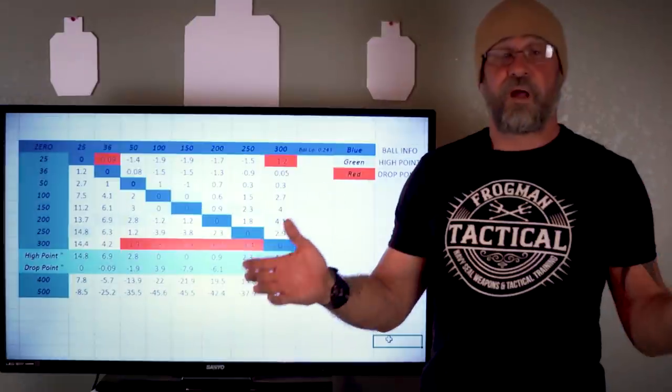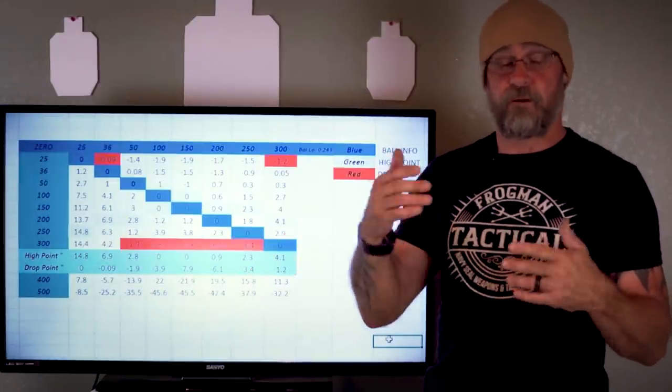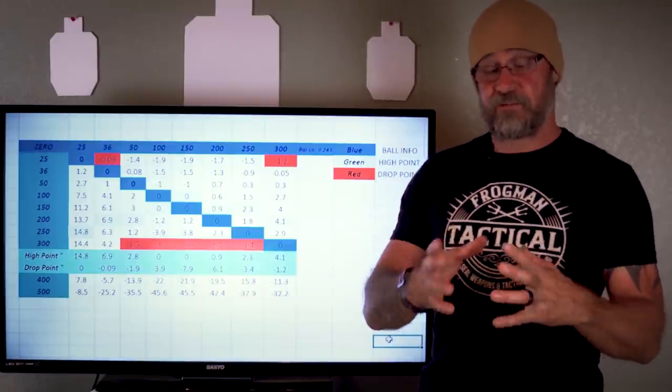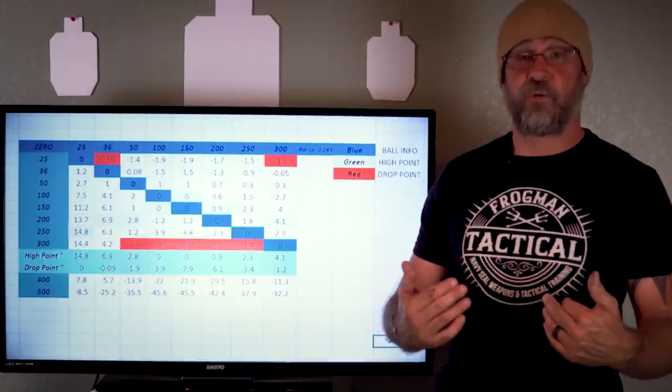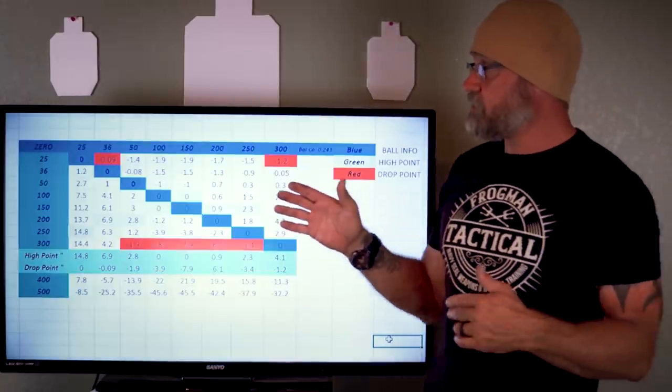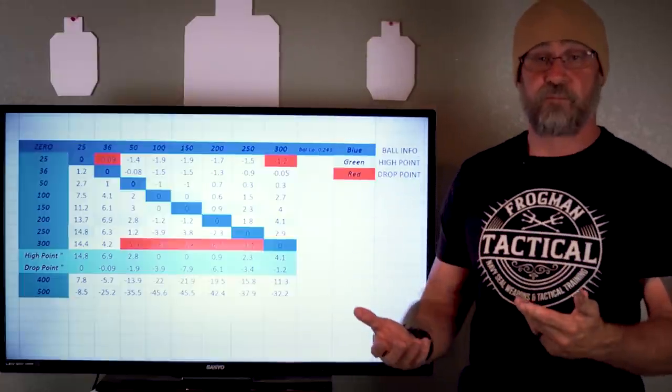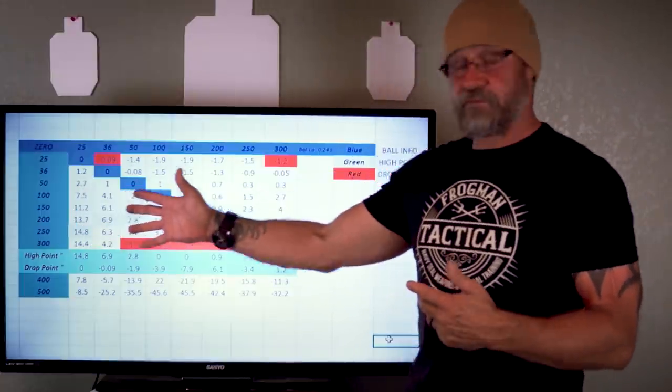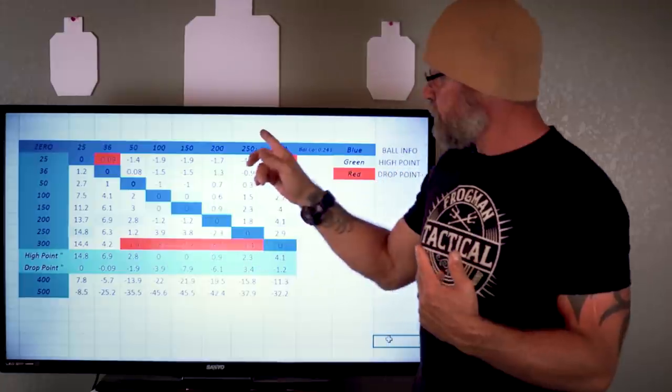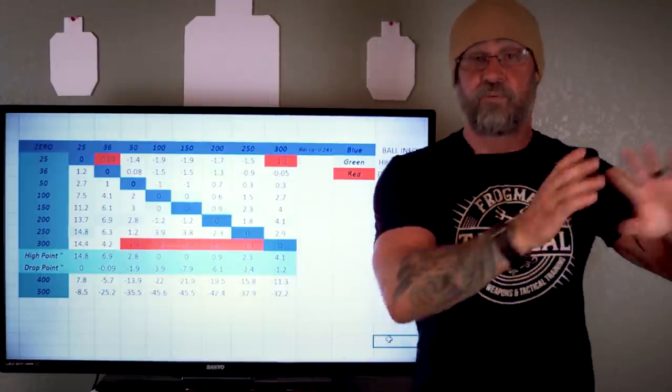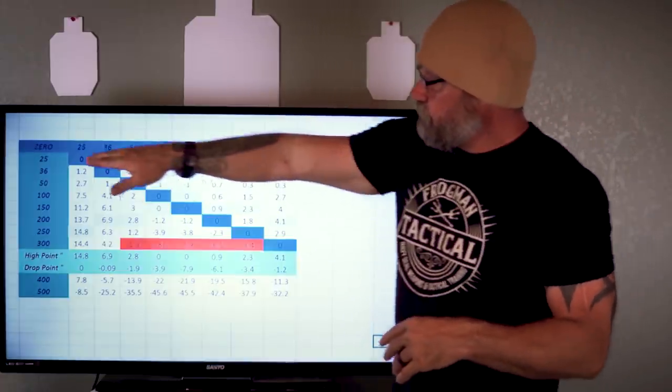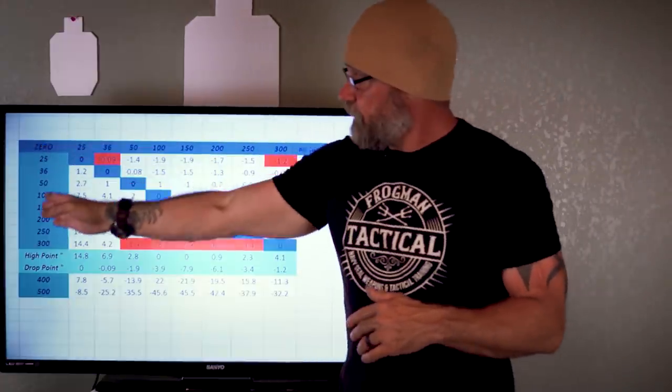So we're back from the range. First and foremost I want to apologize, there's a couple clips where the audio is kind of grainy due to the wind. I was about two hours out before I realized I forgot my external mics, so again I apologize. During this discussion on the range you heard me state a couple times that I had built a ballistic chart for that particular round. So I'm not going to get into how to build a ballistic chart, but I want to go over this so you can see visually why I like the 36 and the 300 yard zero over everything else.